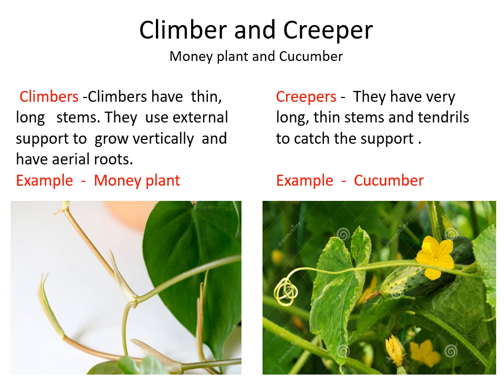Climbers and creepers are plants with green, flexible and non-woody stems, and they are also included in herbs. Climbers like money plant need vertical support and climb along it with the help of aerial roots. Creepers use spring-like parts — that is, tendrils — to hold support and grow. You can see this in cucumber and pumpkin. So these are also included in the category herb.